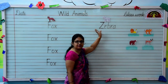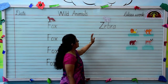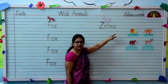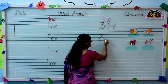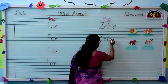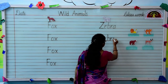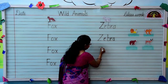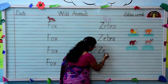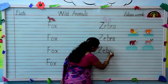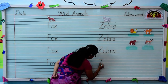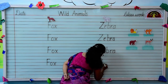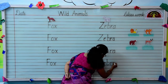Which animal is this? This is zebra. What is the spelling of zebra? We have to write capital Z, then E-B-R-A, zebra. Again we will write the spelling: Z-E-B-R-A, zebra. Have you learned the spelling? Let us revise it again. Z-E-B-R-A, zebra.